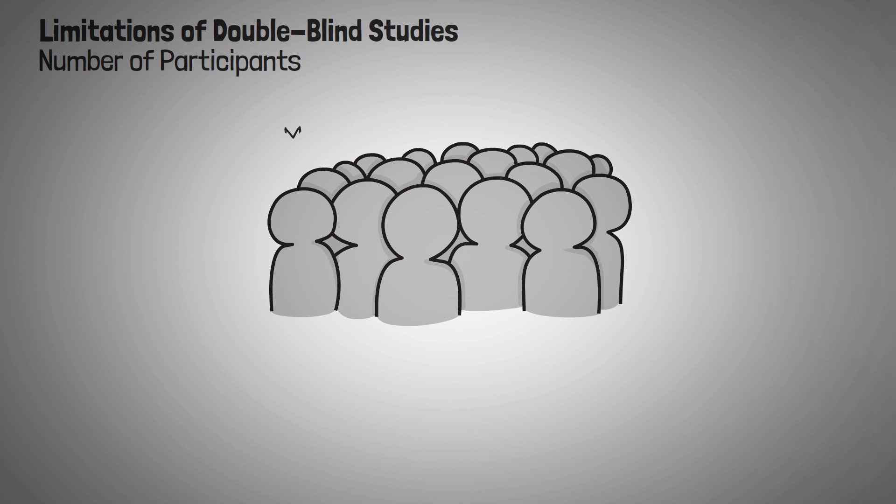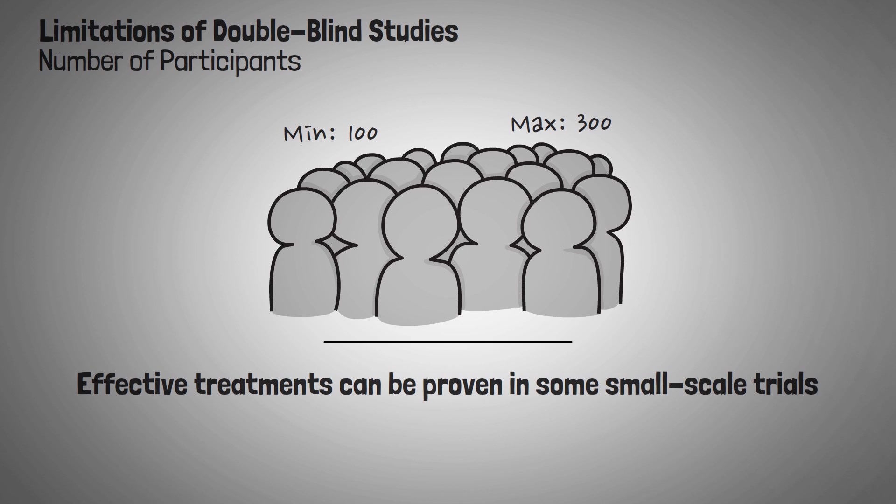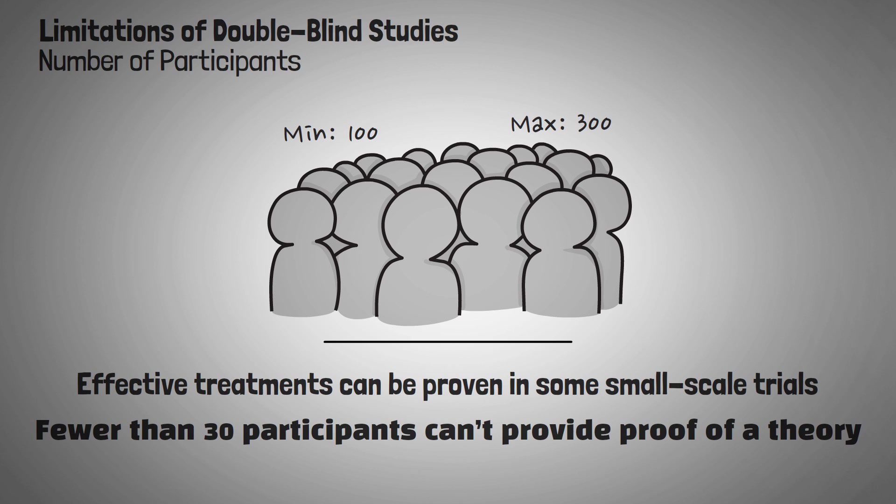Let's go back to the limitations of double-blind studies. Despite their significance, double-blind studies hold a number of limitations, and are not applicable to every type of research. The first one is the number of participants. To be effective, a double-blind study must include at least 100 participants, and preferably as many as 300. Although effective treatments can also be proven in some small-scale trials, many double-blind studies are too limited in their size to provide a representative sample and establish meaningful patterns. Studies involving fewer than 30 participants generally can't provide proof of a theory.